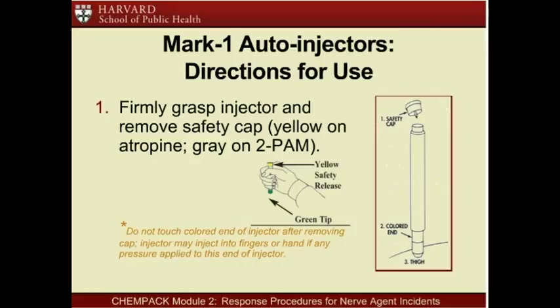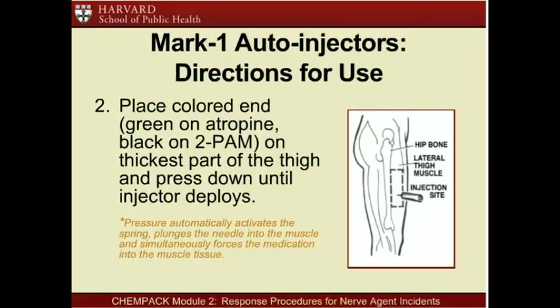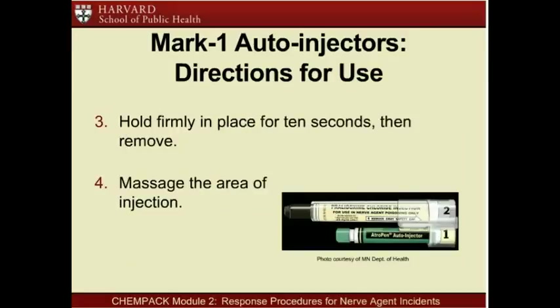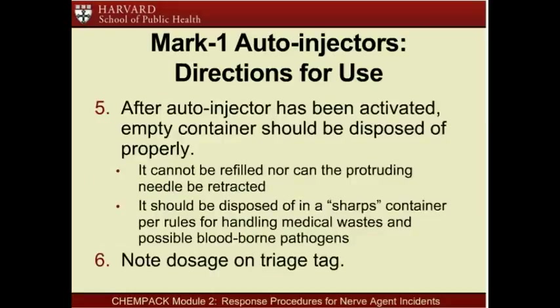To use Mark 1 auto-injectors: first, firmly grasp the injector and remove the safety cap—yellow on atropine and gray on 2-PAM. Be sure not to touch the colored end of the injector after removing the cap, as the injector is designed to function if any pressure is applied and may inject into fingers or hand if touched. Next, place the colored end—green on atropine and black on 2-PAM—on the thickest part of the patient's thigh and press down until the injector deploys. Pressure automatically activates the spring, plunges the needle into the muscle, and forces the medication into the muscle tissue. Hold the injector in place for 10 seconds, then remove and massage the area of injection to help the medication enter the muscle tissue.